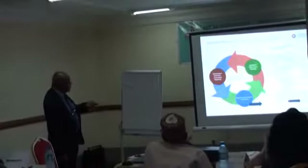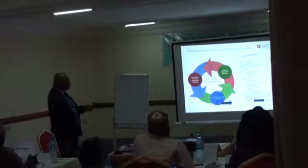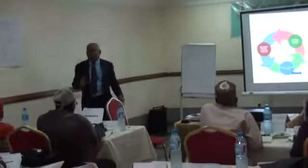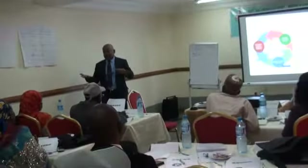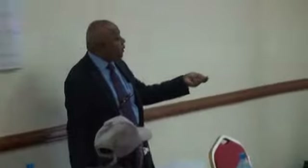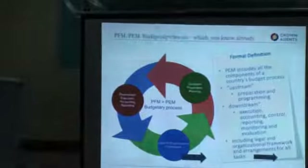Once that happens, you can see the upstream preparation of planning, and then the downstream: the execution, the accounting, the reporting, the monitoring, the information, etc. There is a sequence — what I call the budget cycle. I didn't think it was important to put it there, but in case you want to know, I can insert it. Your own Nigeria will decide when to install this. The downstream, and also the legal and organizing framework — because how do you actually do all this?